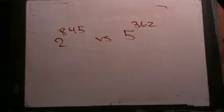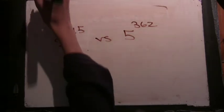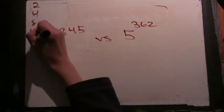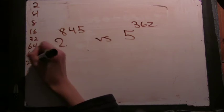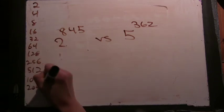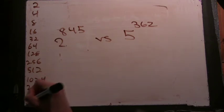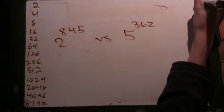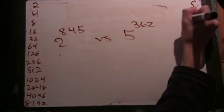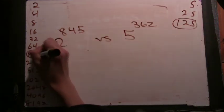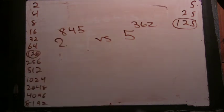Let's see if we can find any powers of 2 and powers of 5 that are close together. So powers of 2, we have 2, 4, 8, 16, 32, 64, 128, 256, 512, 1024. On this side, 5, 25, 125. Well, we have 125 over here and 128 over here. Okay, so those are pretty similar.